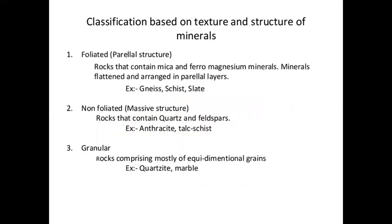Classification based on texture and structure of minerals: foliated, non-foliated, and granular. Foliated rocks contain mica and ferromagnesian minerals; minerals flatten and arrange in parallel layers — examples: gneiss, schist, slate. Non-foliated rocks contain quartz and feldspar — example: anthracite. Granular rocks comprise mostly equidimensional grains — example: quartzite, marble. So, based on texture, three types: foliated, non-foliated, granular.